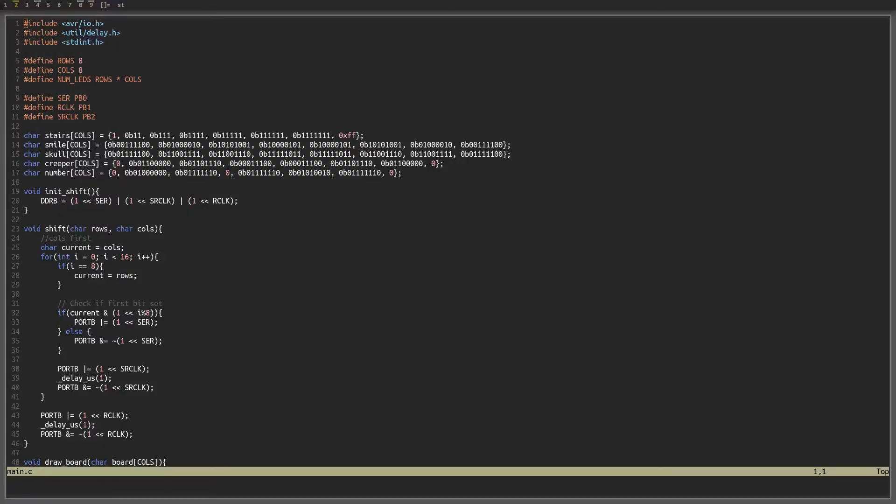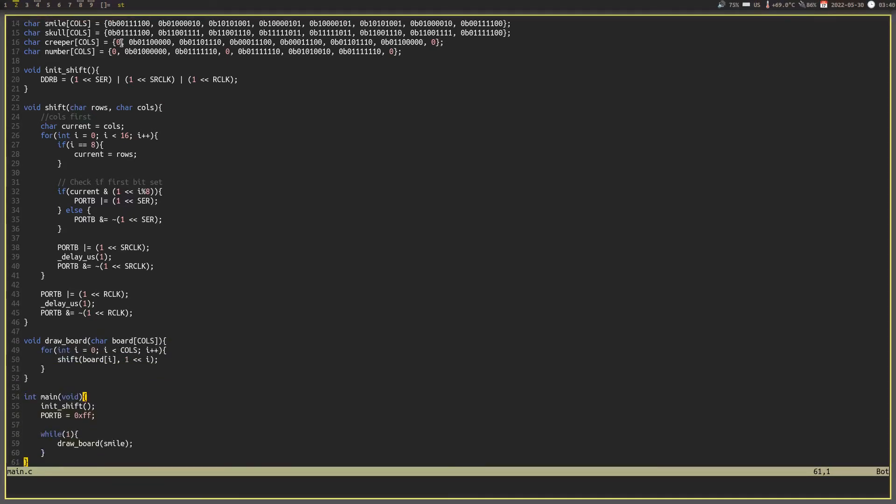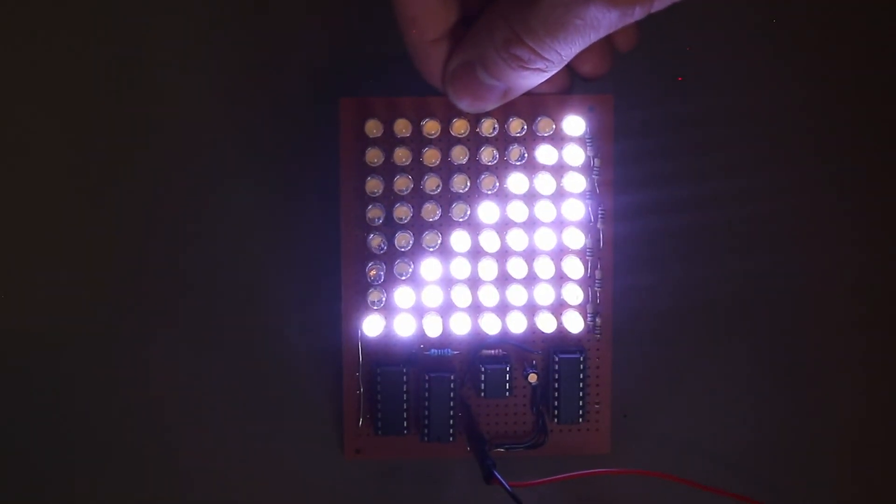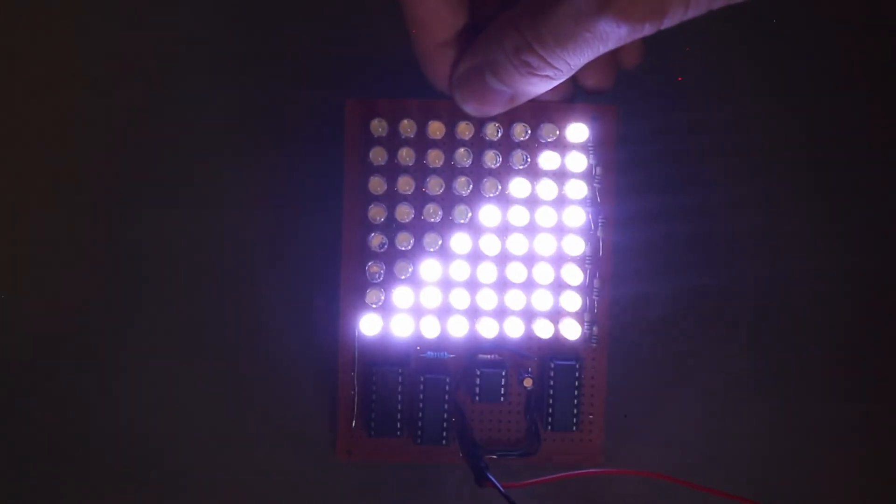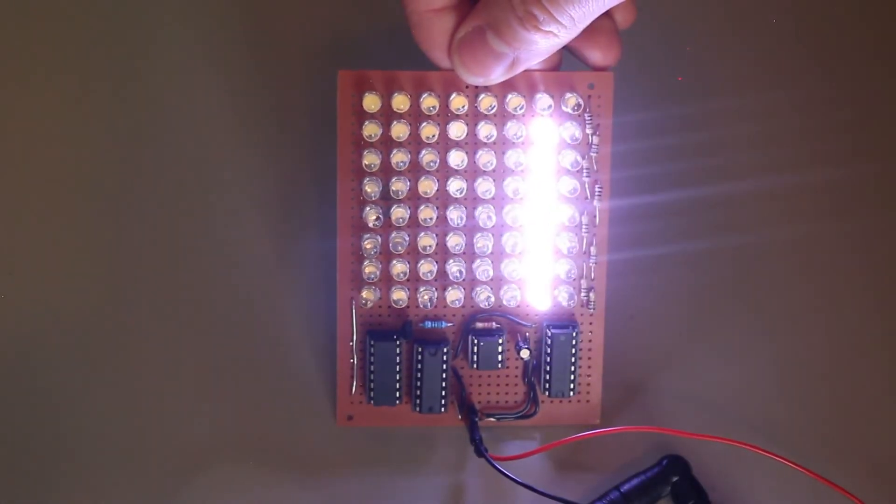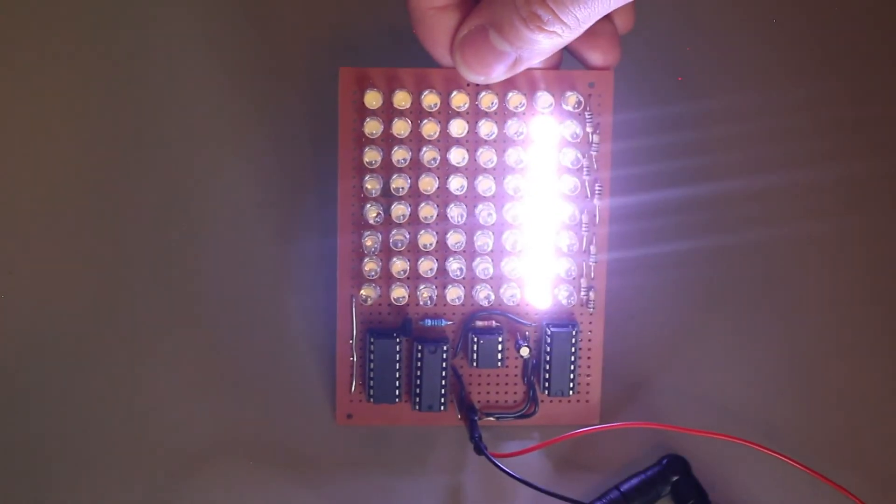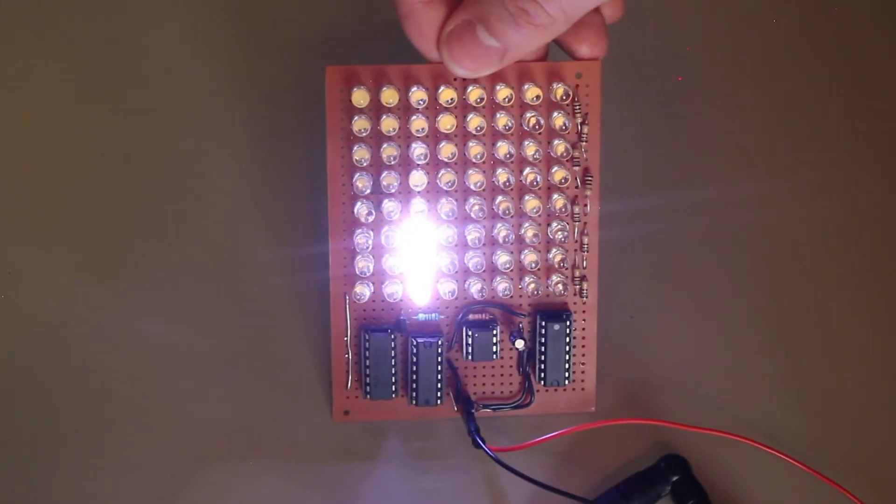Basically, how the code works is that each column will be lit up one at a time, and this process will be repeated so quickly that you can't even tell. Here, I will show you the difference between the sped up version, which is what I'm seeing normally, and the slowed down version, which is what is actually happening. Because of this technique, we are able to save some power because not all the LEDs are on at the same time.